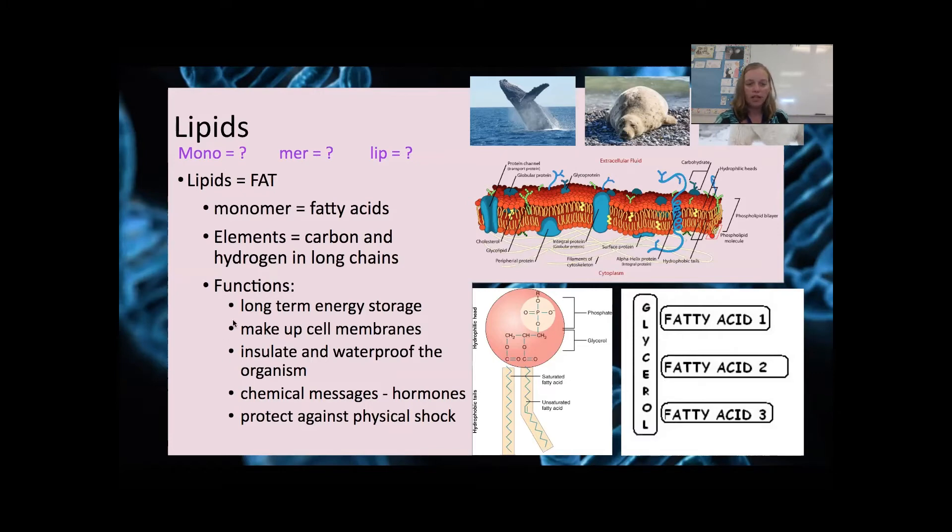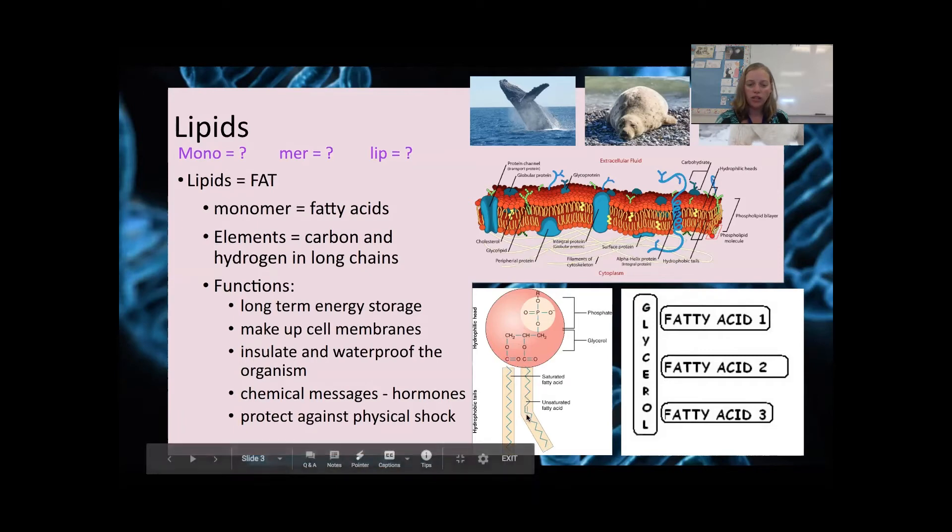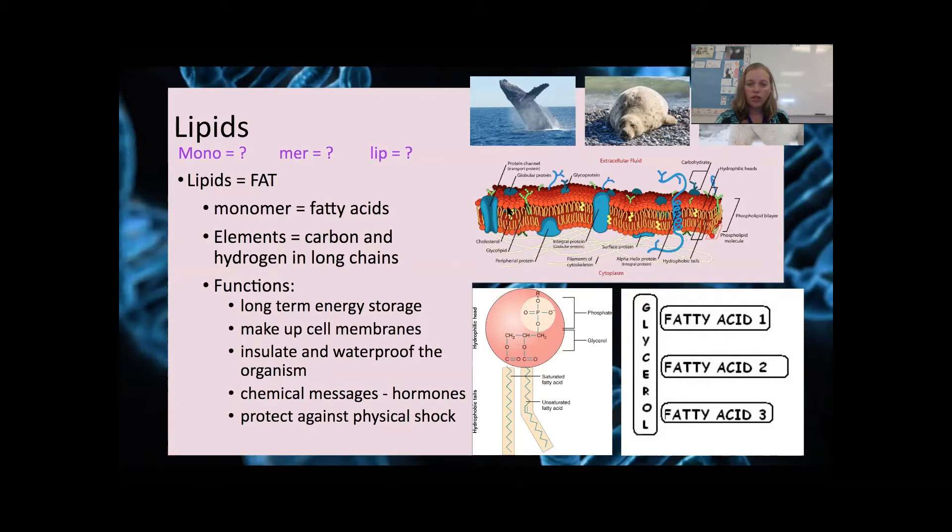Lipids are also involved in making up cell membranes. This is called a phospholipid, and phospholipids have a phosphate head and two fatty acid tails. You can see that this one is unsaturated because it is bent, and this one is saturated because it is straight. If we put lots of these little phospholipids together, then you can get your phospholipid bilayer, which makes up your cell membrane. We'll talk about that more later.